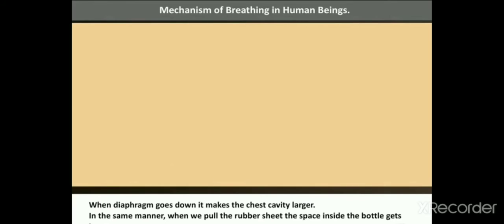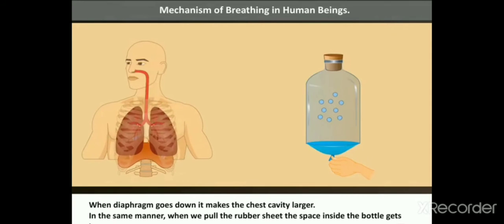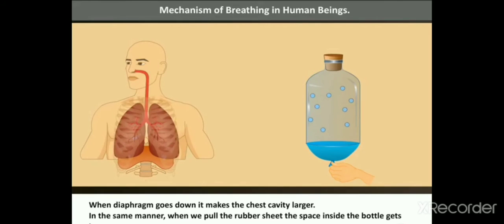When diaphragm goes down, it makes the chest cavity larger. In the same manner, when we pull the rubber sheet, the space inside the bottle gets larger.